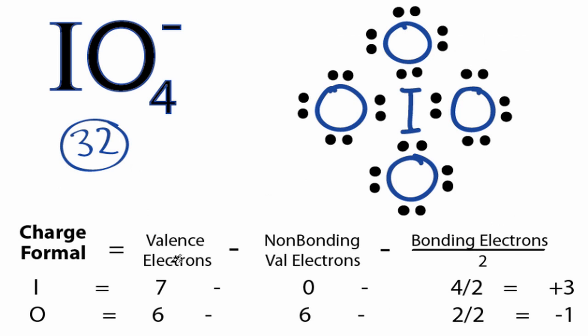Looking at the iodine atom, we can see iodine is in group 7 on the periodic table, so it has 7 valence electrons there. Non-bonding, all of these electrons are involved in chemical bonds with the oxygen, so that's 0.